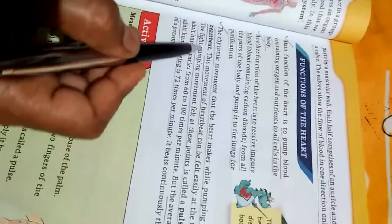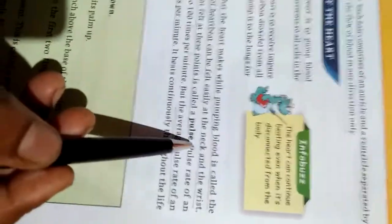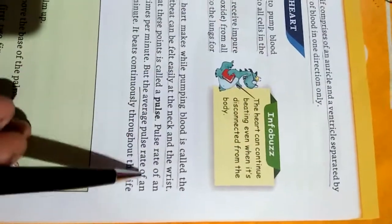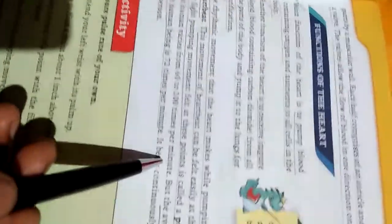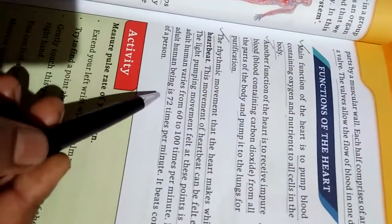The rhythmic movement that the heart makes while pumping blood is called the heartbeat. This movement can be felt easily at the neck and the wrist. The light pumping movement felt at these points is called a pulse. The pulse rate of an adult human varies from 60 to 100 times per minute, with an average of 72 times per minute.